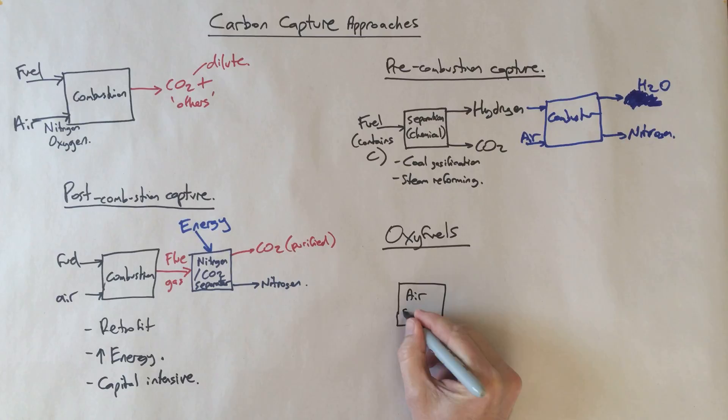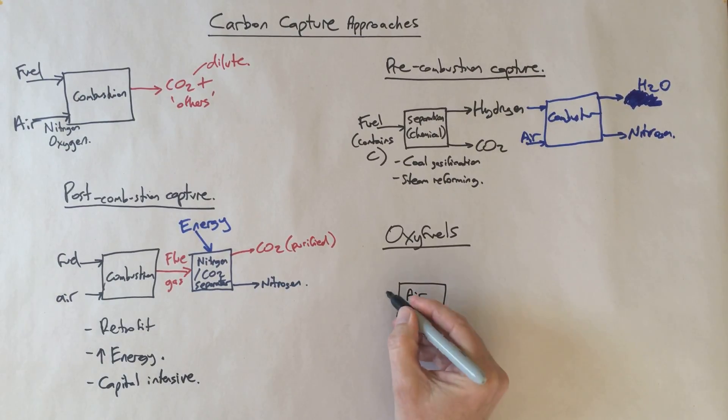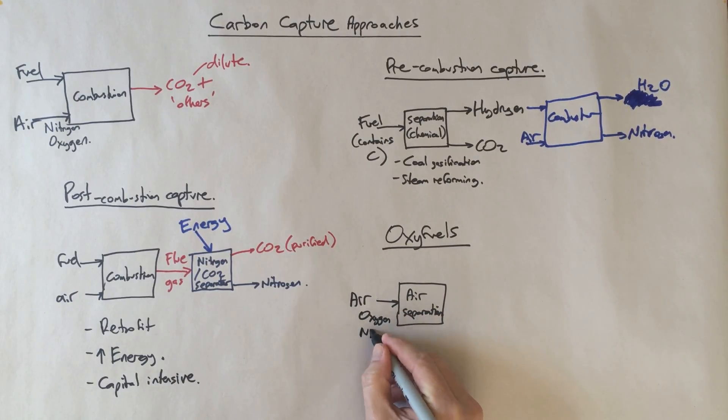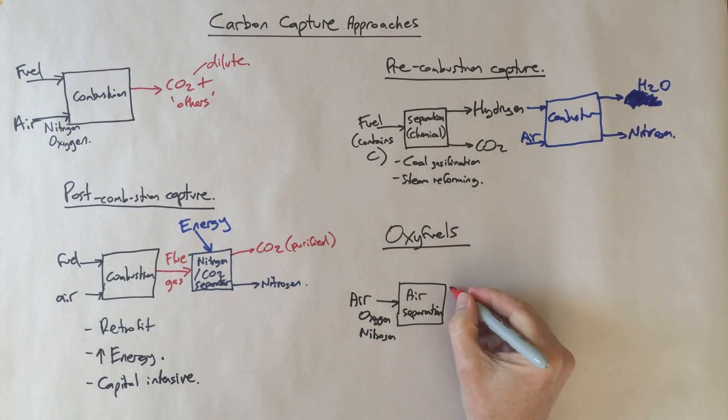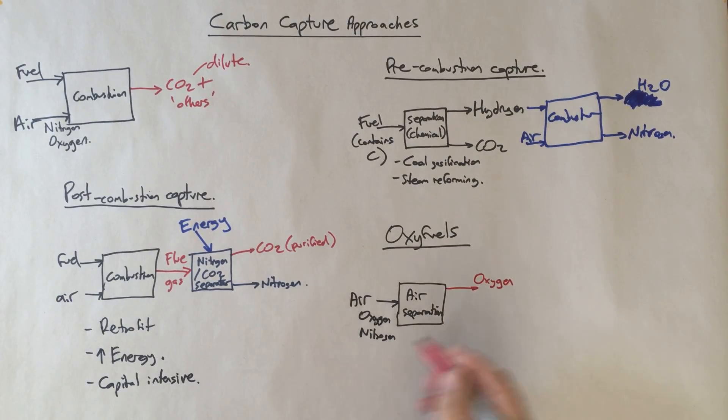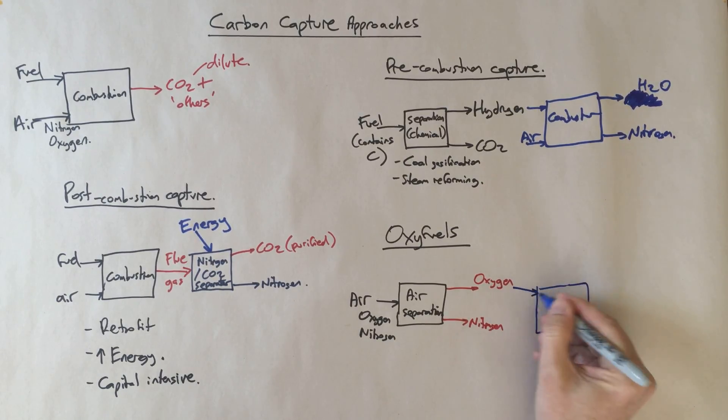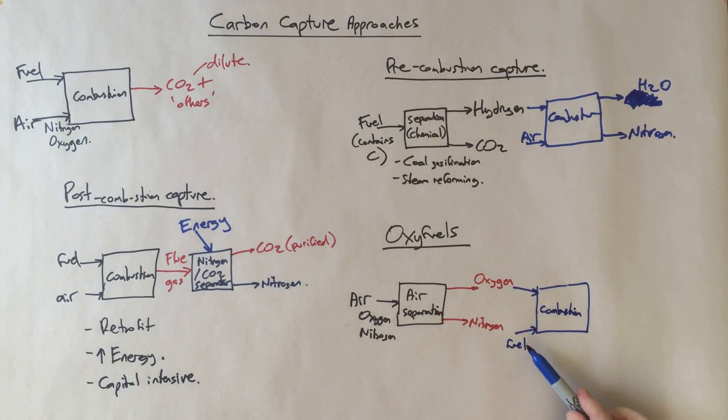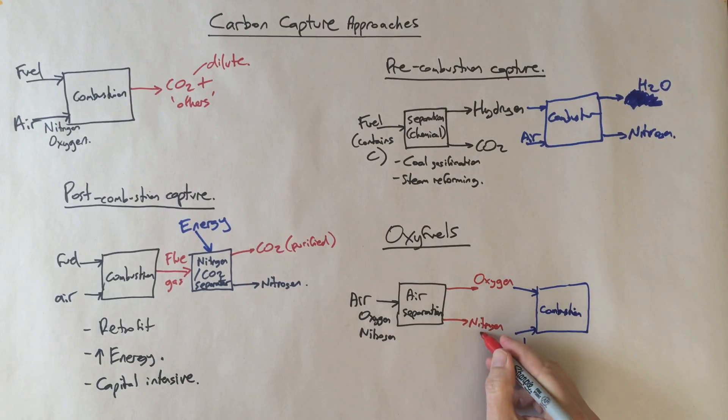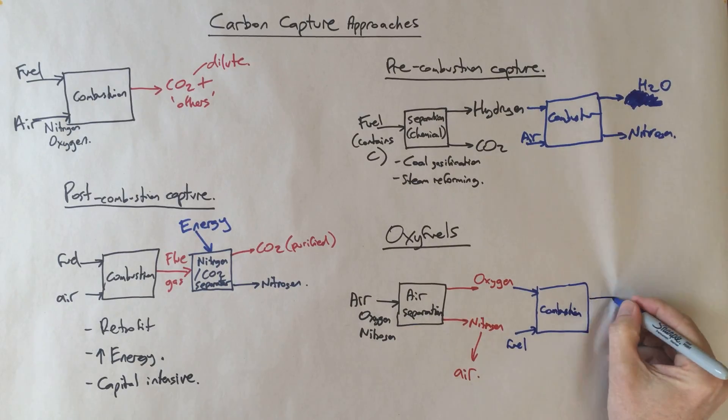What we end up with at the start is what's known as an air separation system. There's a lot of technologies that can do that. What they effectively do is they take in some air, which is predominantly oxygen and nitrogen, and we take out our oxygen and nitrogen as separate streams. So we've separated the air into oxygen and nitrogen. The nice thing is that we can then run our combustion process on purified oxygen. Here's our combustion plant and here's our fuel. Note that the nitrogen has been separated off - we actually take that usually and just release it back to the air.